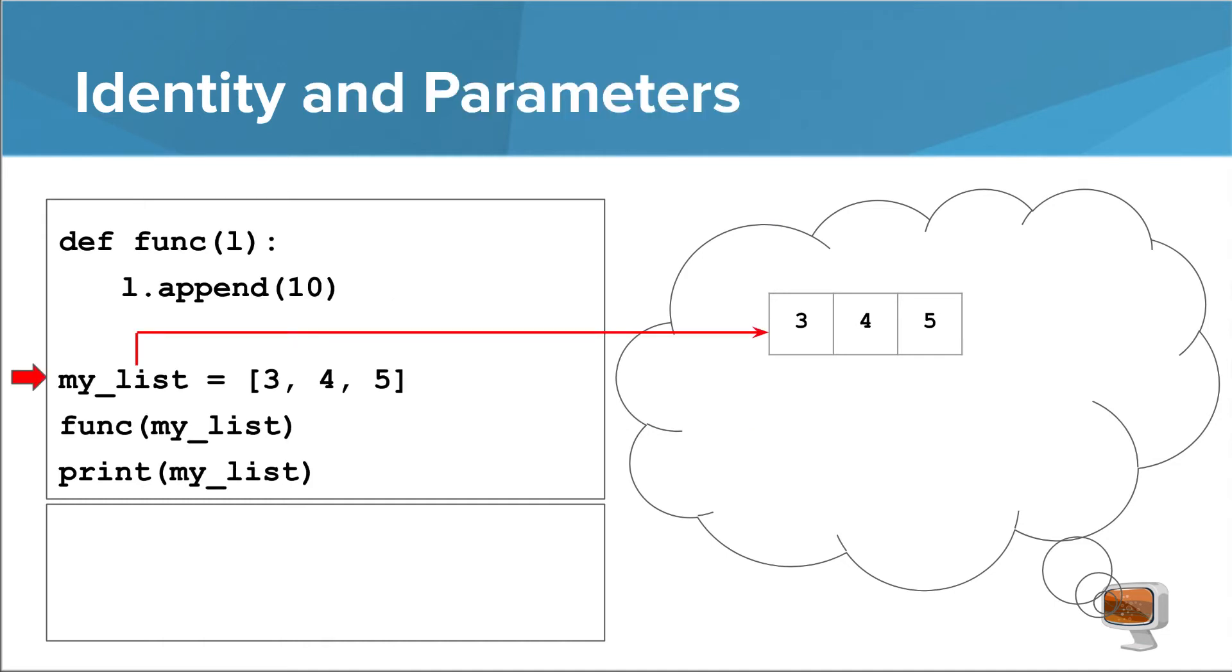It's important to understand the concept of identity when you pass mutable things as arguments. Take a look at this example. We have a list called myList with the numbers 3, 4, and 5. When we call the function called func, L becomes another reference to the same list. That is to say, for the time being, myList and L are identical. This means that whatever happens to L secretly also happens to myList.